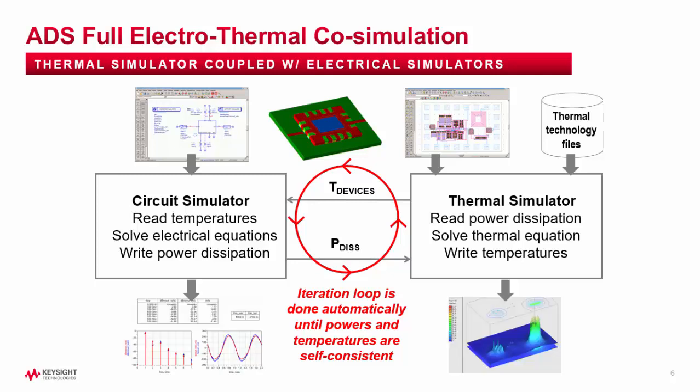There are two main benefits to running a full electrothermal co-simulation. First, you get more accurate device temperatures, and therefore potentially more accurate circuit simulations — assuming your device models are accurately varying versus temperature. Second, you get a full 3D temperature profile of the layout. There is a built-in 3D viewer that allows you to post-process and view temperatures in 3D, and you can use it in various ways to gain insights.